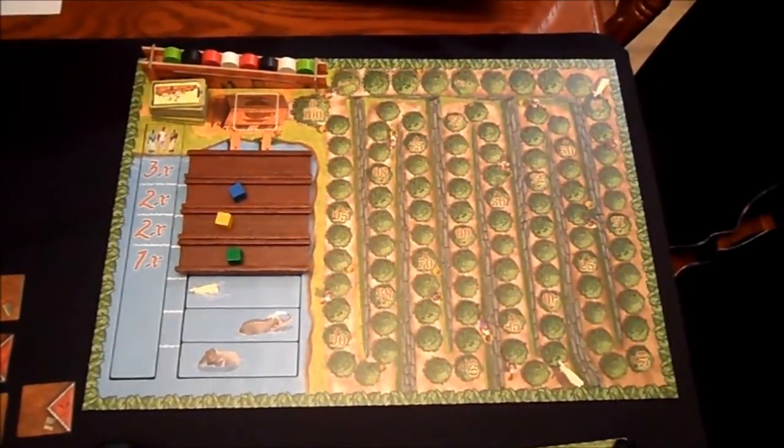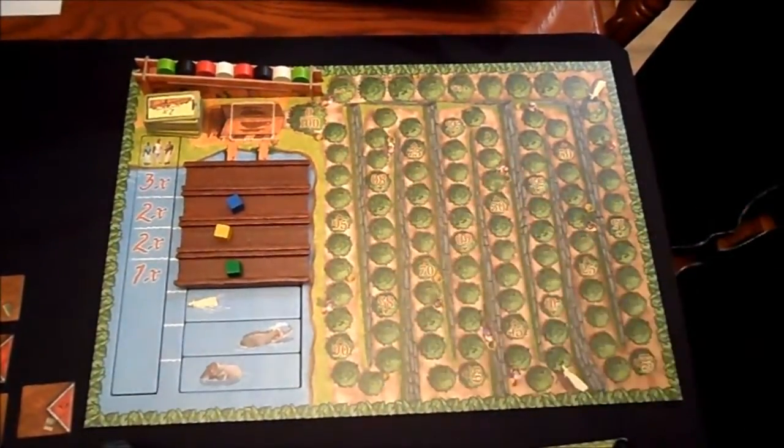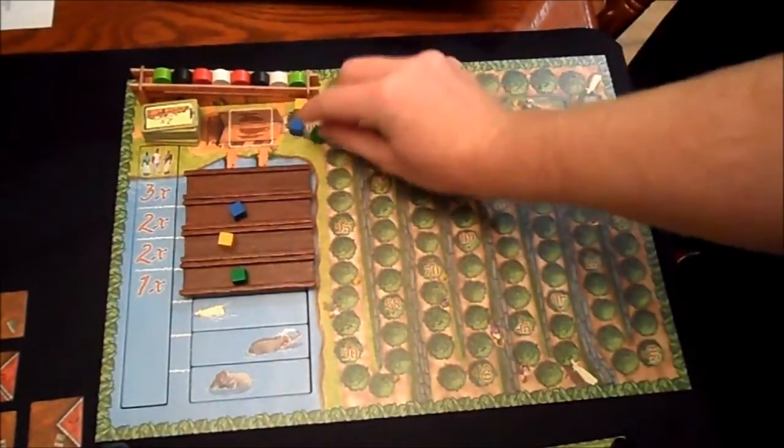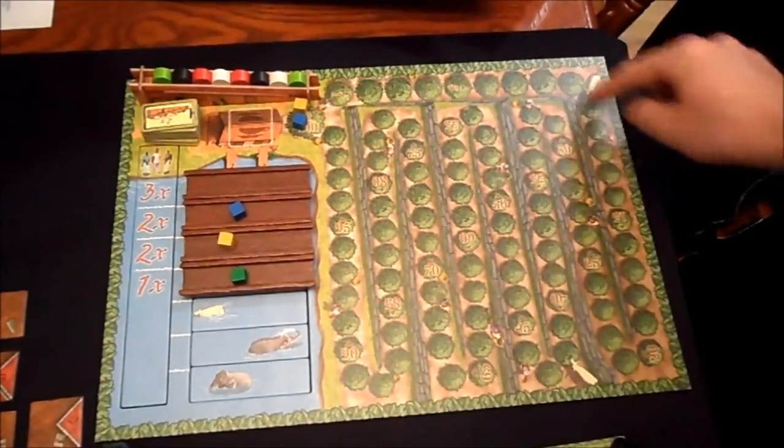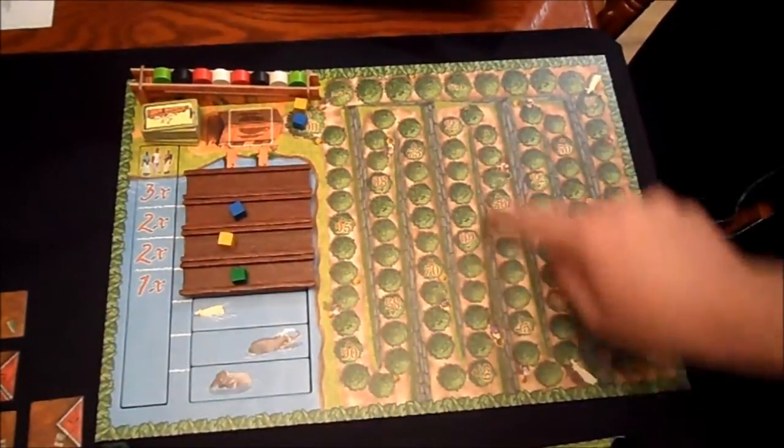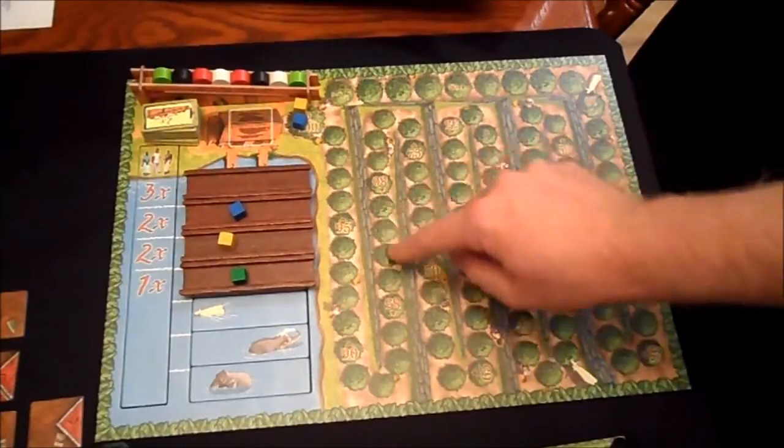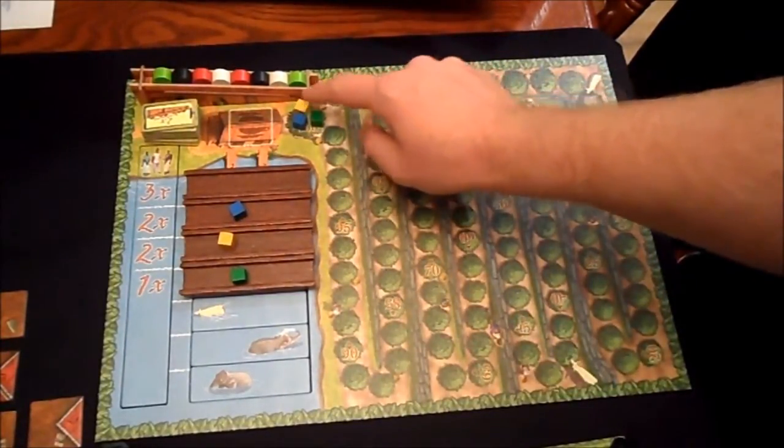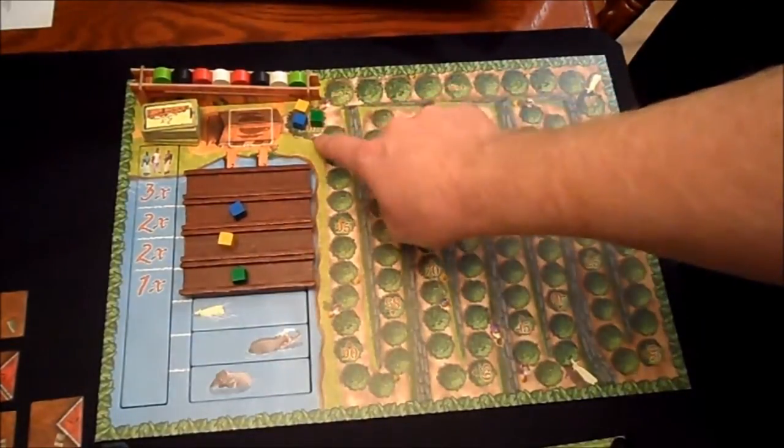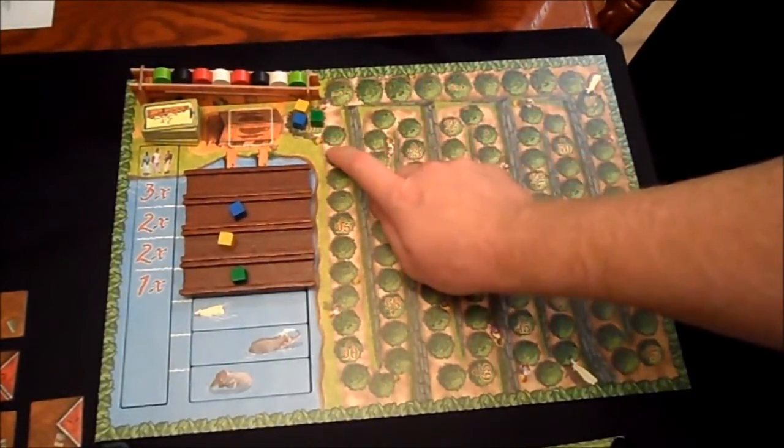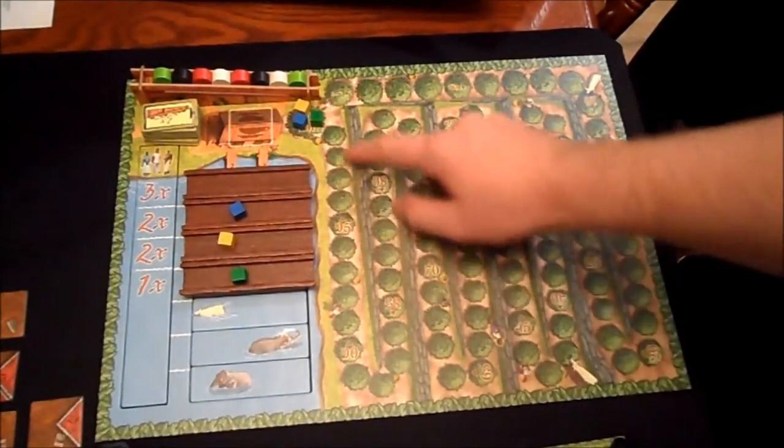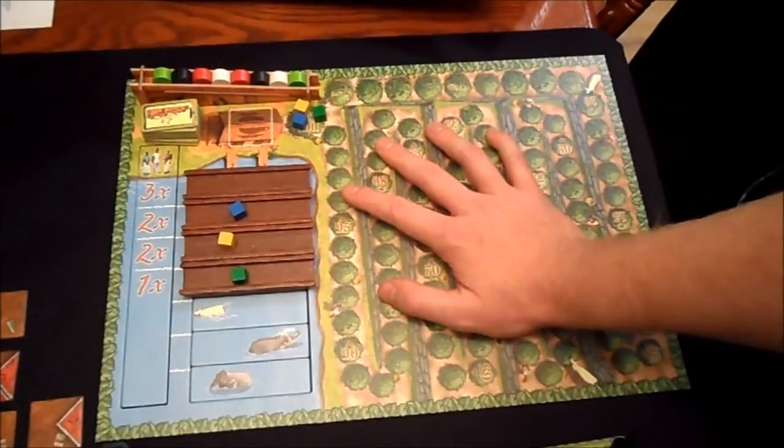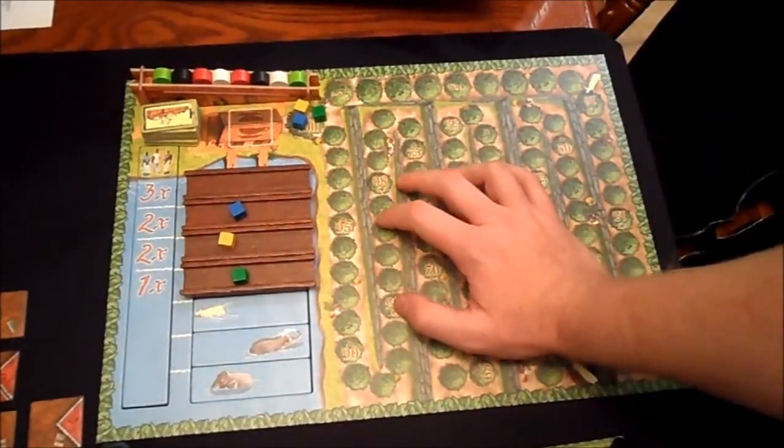Each player is going to put one of their cubes here to mark their progress on the scoring board. It winds up and down, so you've got to be careful. The game is going to end as soon as somebody hits 100 points. Tally up your final score. Whoever has the most victory points wins the game.